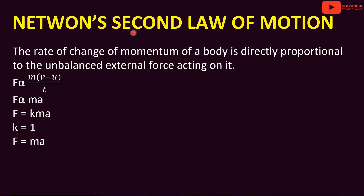The rate of change of momentum of a body is directly proportional to the unbalanced external force acting on it — this is Newton's second law. So F is proportional to m into (v minus u) divided by t. Since (v minus u) divided by t is the change in velocity divided by time, that is the acceleration a.